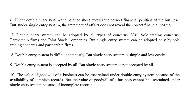The sixth difference: under the double entry system, the balance sheet reveals the correct financial position of the business. But under the single entry system, the statement of affairs does not reveal the true financial position. So in double entry we prepare a balance sheet and can identify the correct financial position, whereas in single entry we prepare a statement of affairs.